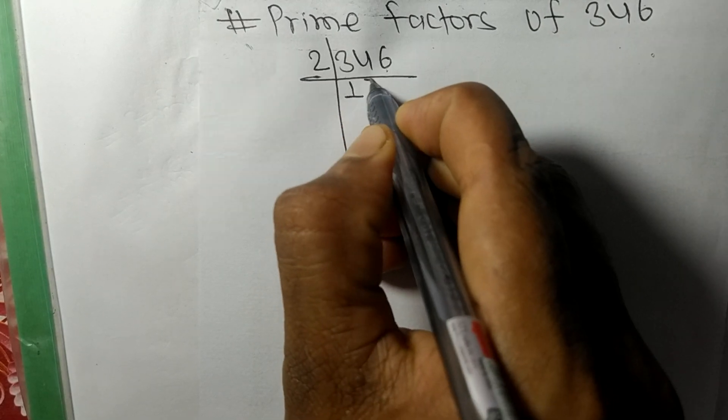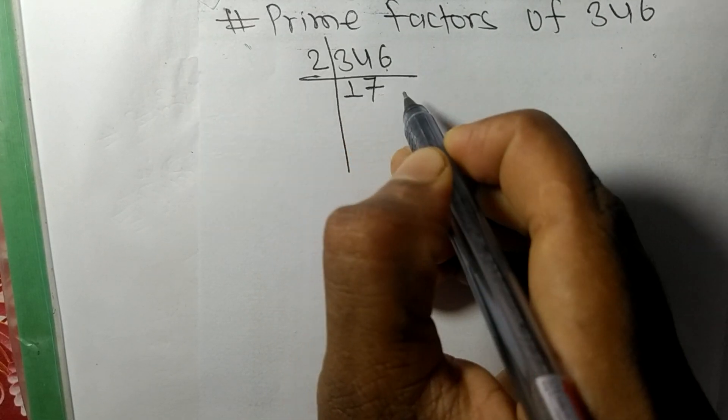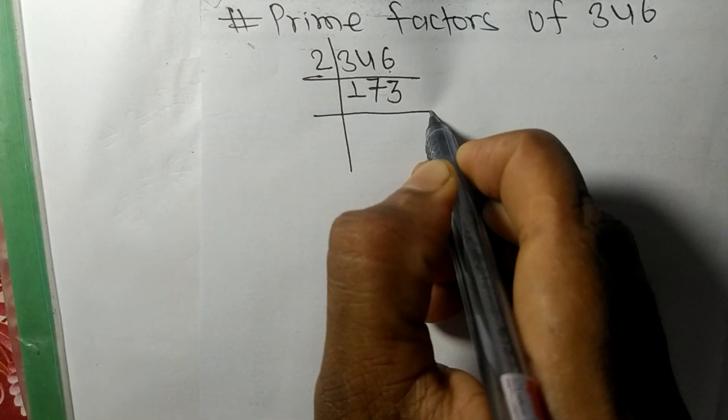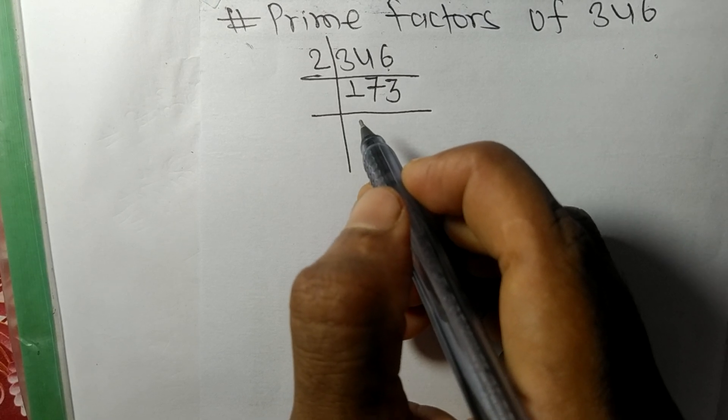1 and 4 is 14. 2 times 7 is 14, and 2 times 3 is 6. So now we got 173.